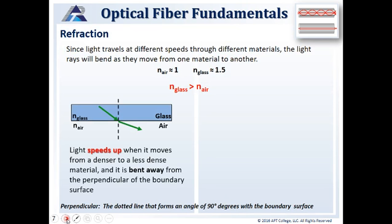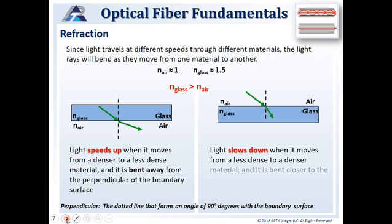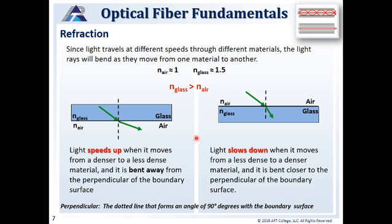Since light travels at different speeds through different materials, light rays bend as they move from one material to another. You should have seen this if you've been around clear water and put a stick or your arm into it. Going from the lower refractive index of air into the higher refractive index of water, it appears that your arm is bending downward. This is because light speeds up or slows down going from one material to another — light speeds up moving from denser to less dense and slows down moving from less dense to dense, appearing to move toward the perpendicular.